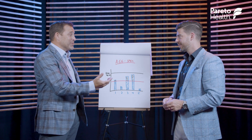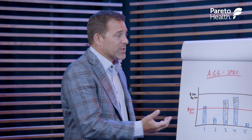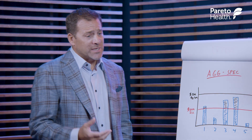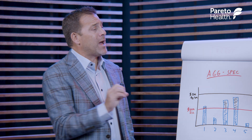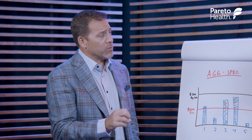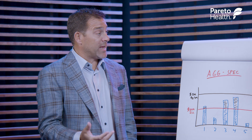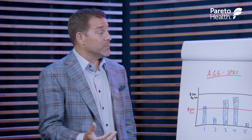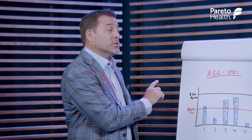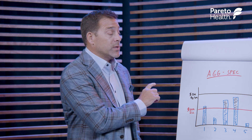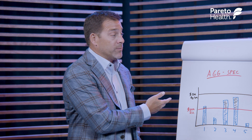Yeah, it's a really confusing term, perhaps the most confusing term that we have in stop-loss. But the aggregating specific essentially is a bucket of claim dollars that exist on top of the specific deductible for a client. Before the stop-loss carrier reimburses any type of claim, the employer has to eat all those claim dollars in that aggregating specific bucket before a stop-loss carrier reimburses any portion of the claim.